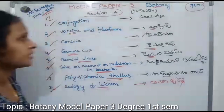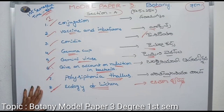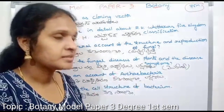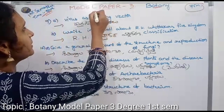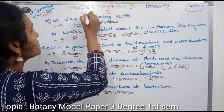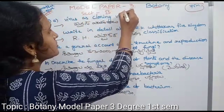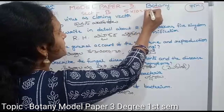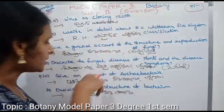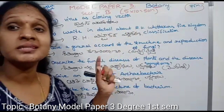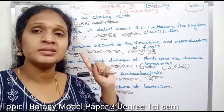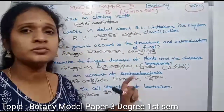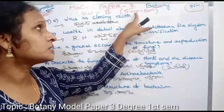Section B is essay questions. Section B essay questions carry 10 marks each — 5 questions for 50 marks. Each section has one question to be selected; there are five sections, so you select five questions. Each question carries 10 marks, giving 5 × 10 = 50 marks.